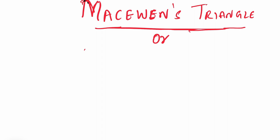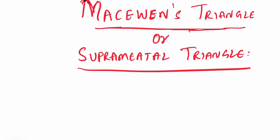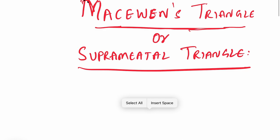Hello friends, welcome back to our YouTube channel Doctor's Corner. Today we are going to study about McEwen's triangle, also known as the Suprameatal triangle. This is very important for ENT surgeons, and also in the subjects of anatomy and ENT this can be a 3-mark short note. We are going to discuss the boundaries and the clinical significance.